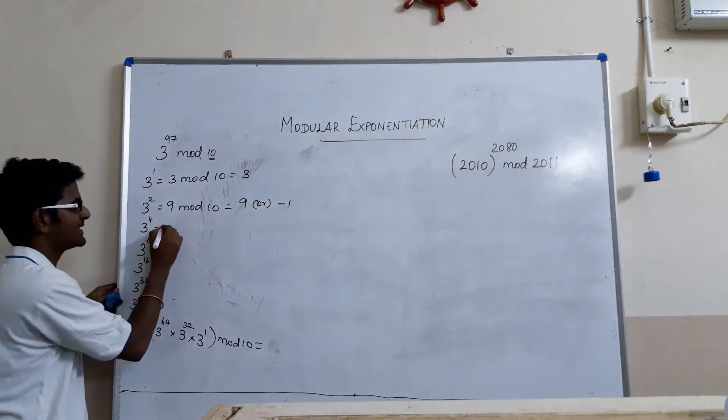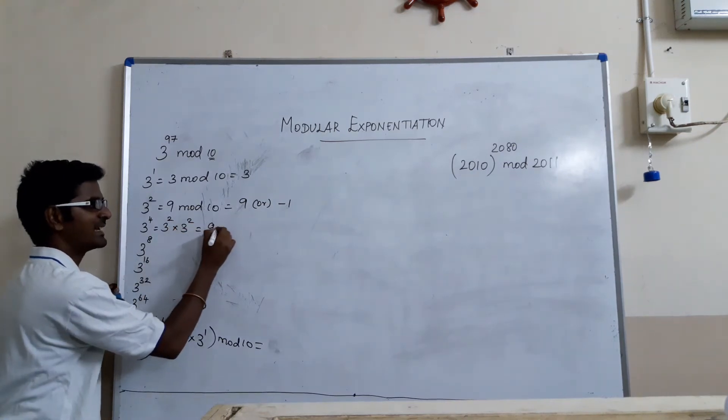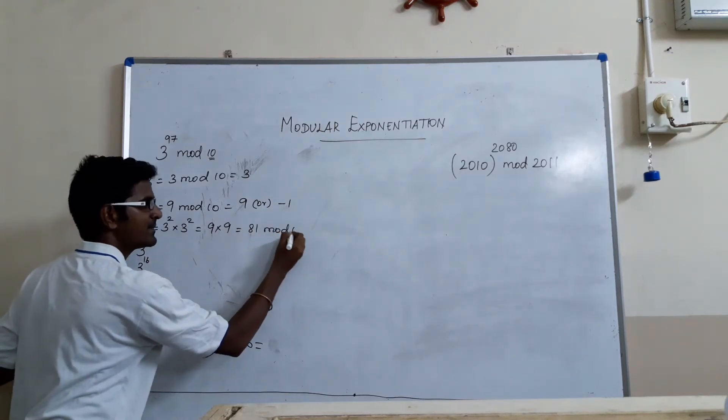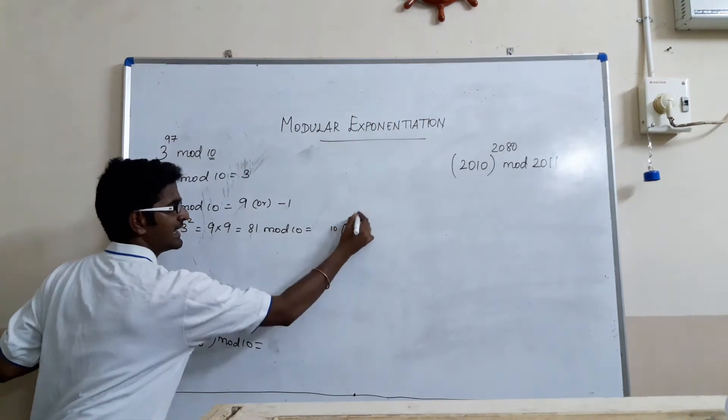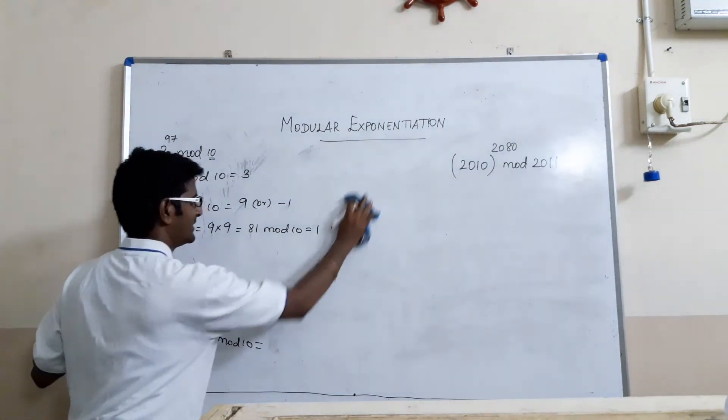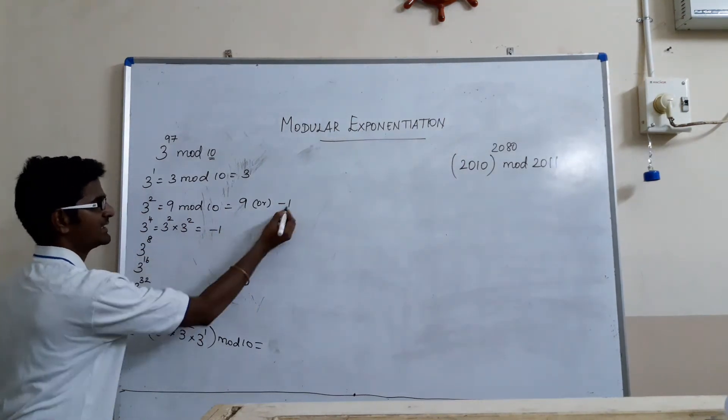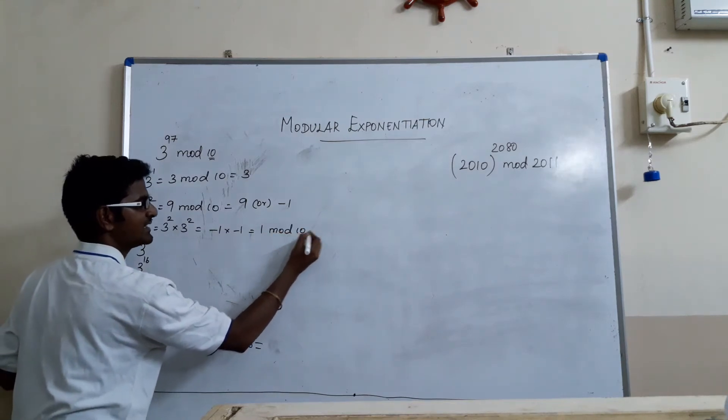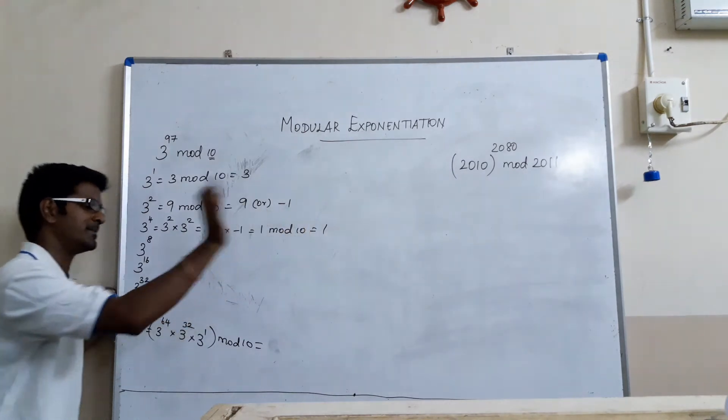Now, 3 power 4, just take the previous step: 3 power 2 into 3 power 2. Instead of 9, say if you take 9 also no problem. 9 into 9 is 81 mod 10 which is equal to 81 when it is divided by 10. 10 into 8 times 80 and the remainder is 1. Or, we can take minus 1. 3 square is minus 1 into minus 1 which is equal to plus 1 mod 10 which is equal to plus 1, or minus 9 but 1 is smaller number and equal to 1.